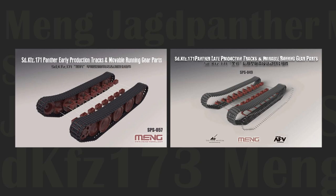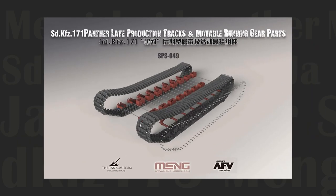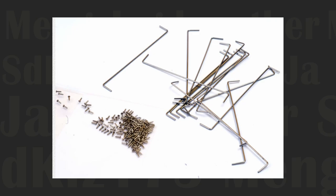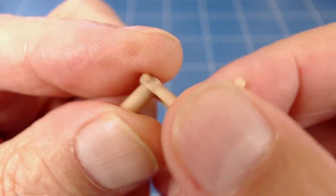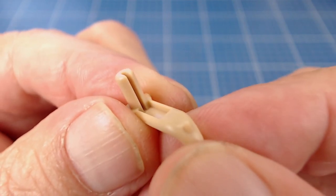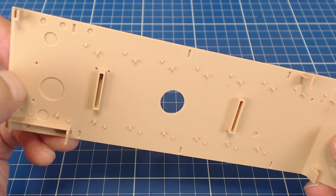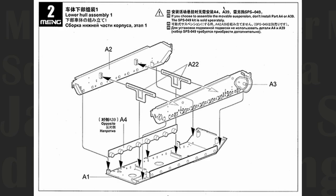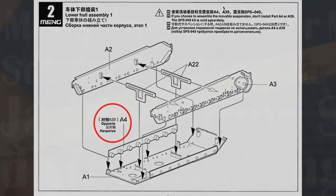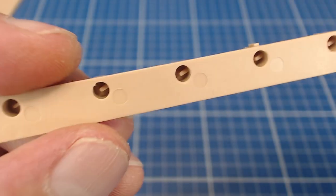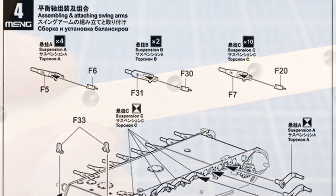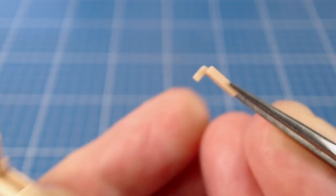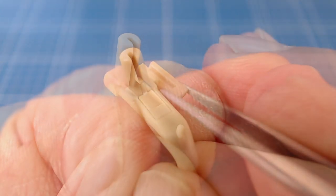Meng sells separate optional kits which allow us to give our Jagdpanther workable torsion suspension. These kits contain workable tracks, track pins, mounts for the torsion wire, and metal rods for the torsion bars. The swing arms have a slot into which the ends of the torsion rod slip into. Also, the inside of the hull bottom has these little posts which, if installed, keep the little torsion rods aligned. Since we're not installing the torsion suspension, we have to install parts A4. These parts are keyed so our swing arms sit at the proper angle once installed. If we're not using the suspension kit, we have to insert these little filler pieces into each swing arm.